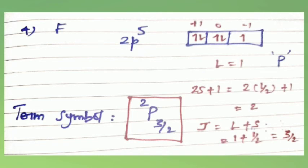The sub-shell is more than half-filled, so J = L+S = 1+1/2 = 3/2. Therefore the term symbol for fluorine is ²P₃/₂.